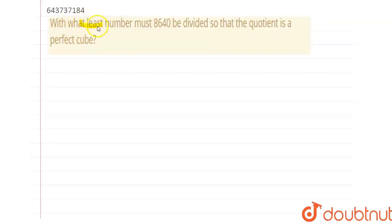Hello everyone, here the question is: with what least number must 8640 be divided so the quotient is a perfect cube? Let's start the solution.